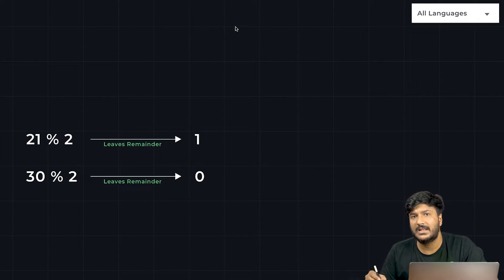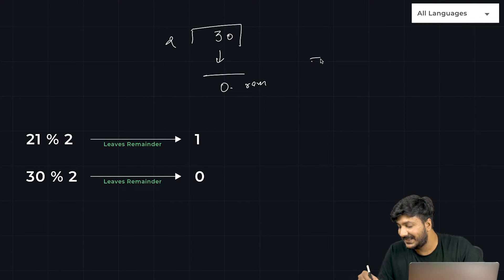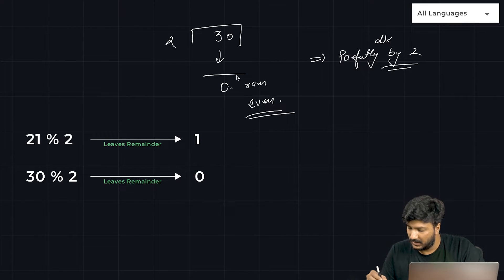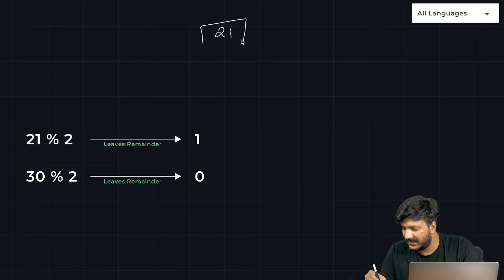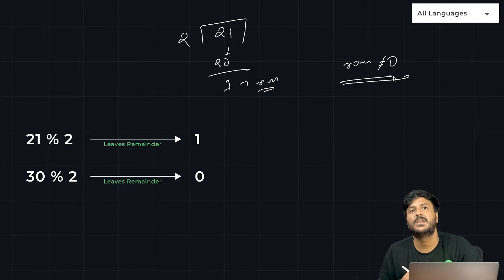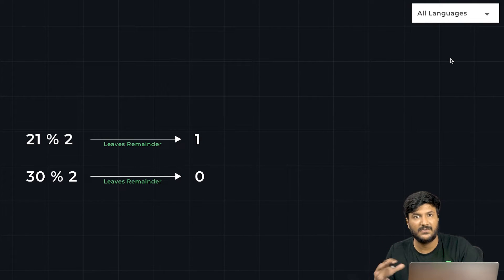How do you calculate mathematically if a number is even or odd? It's fairly simple: you divide that number — let's say 30 by 2 — and if the remainder is zero, it is perfectly divisible by 2, so we say the number is even. For example, 21 divided by 2 gives a remainder of 1. Since the remainder is not equal to 0, the number is odd. So simply: if the remainder is 0, the number is even; otherwise, it's odd.